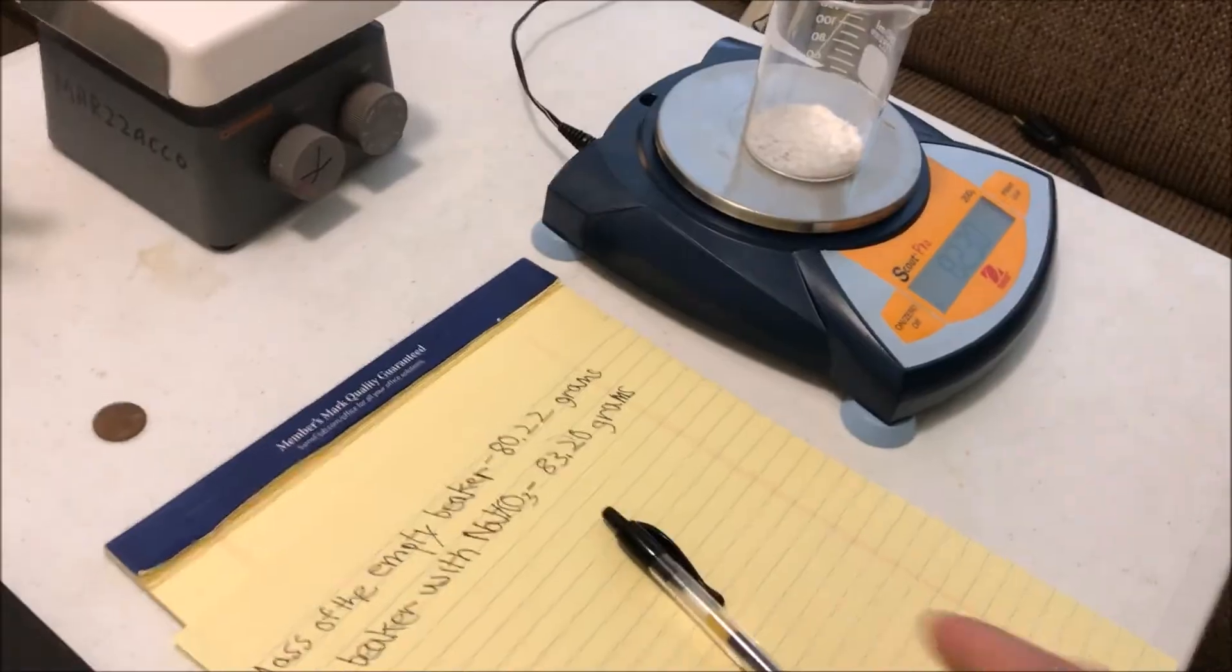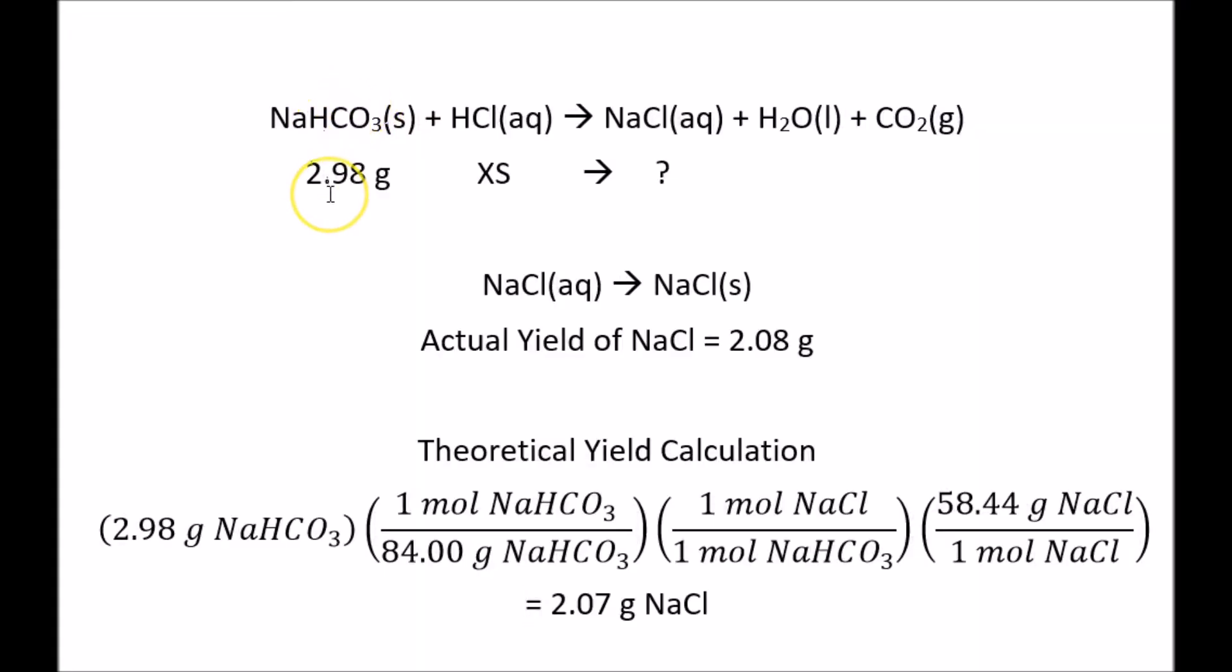82.2 grams. After reacting 2.98 grams of sodium bicarbonate with excess hydrochloric acid and getting sodium chloride, water, and carbon dioxide, we evaporated off the water and got the solid sodium chloride. We took the mass of it, and it was 2.08 grams of sodium chloride.